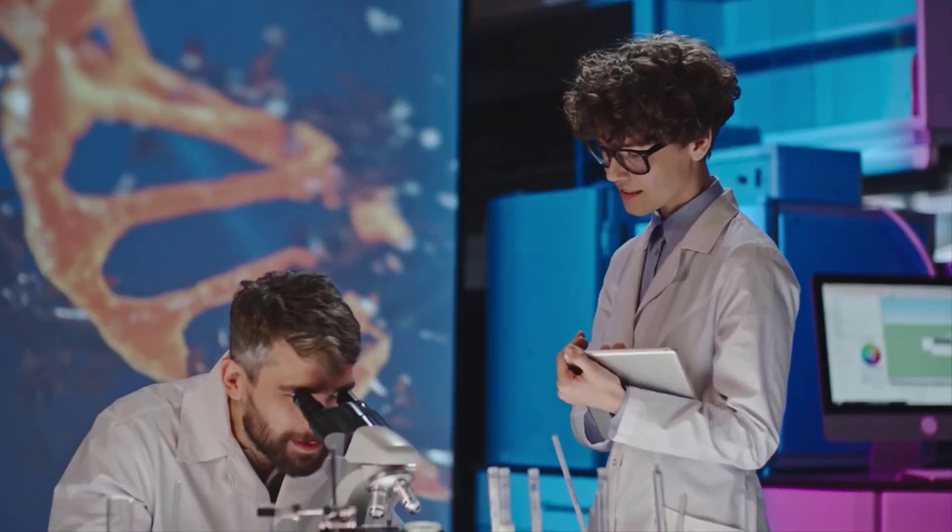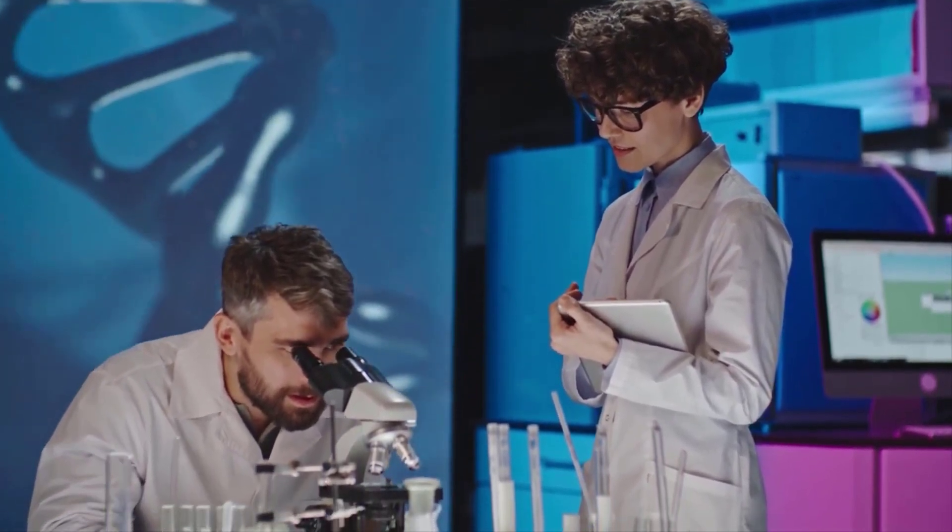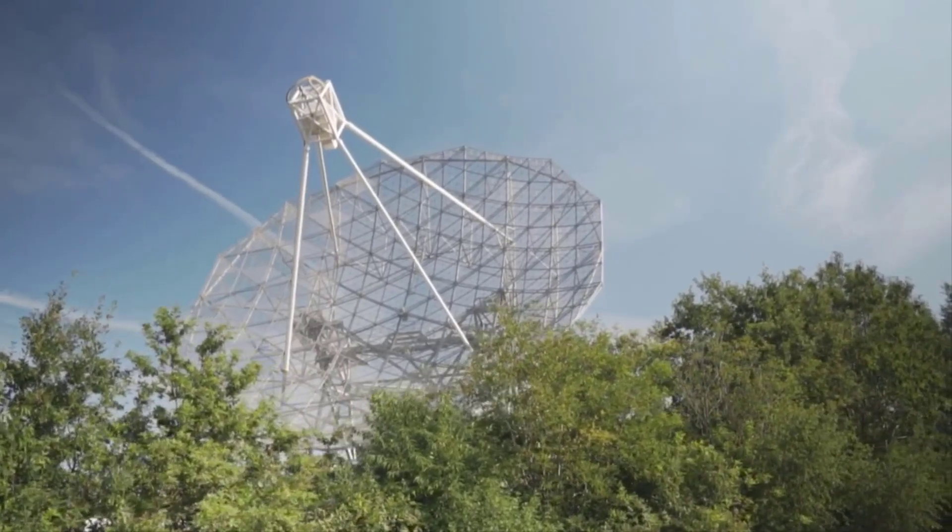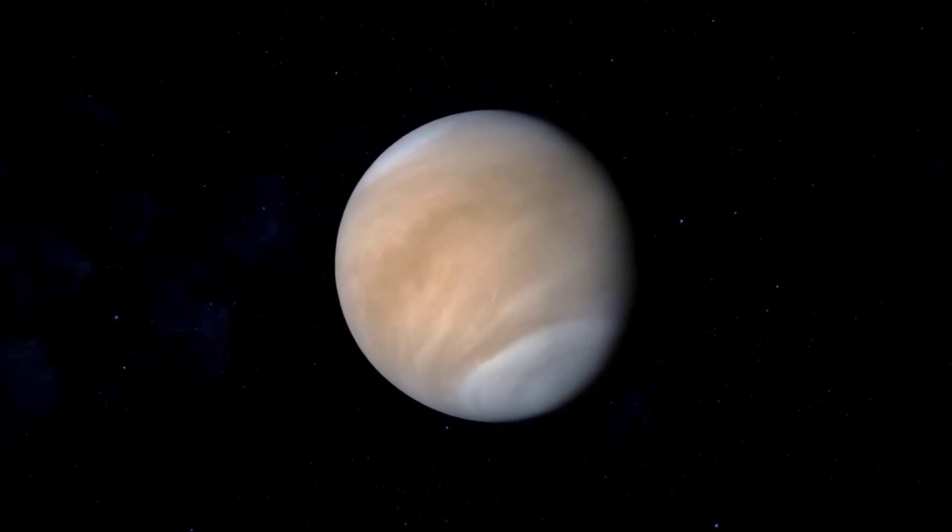Venus, named after the Roman goddess of beauty, roasts at temperatures of hundreds of degrees and is cloaked by clouds that contain droplets of corrosive sulfuric acid. Few have focused on the rocky planet as a habitat for something living.